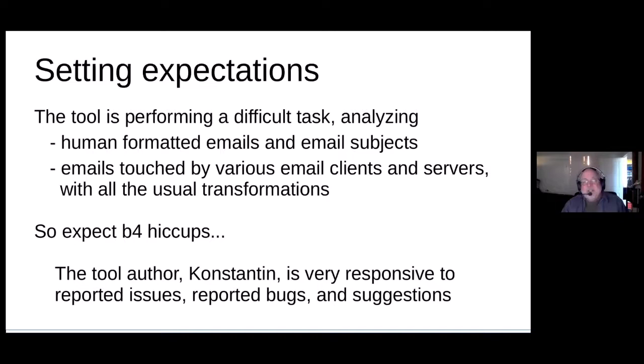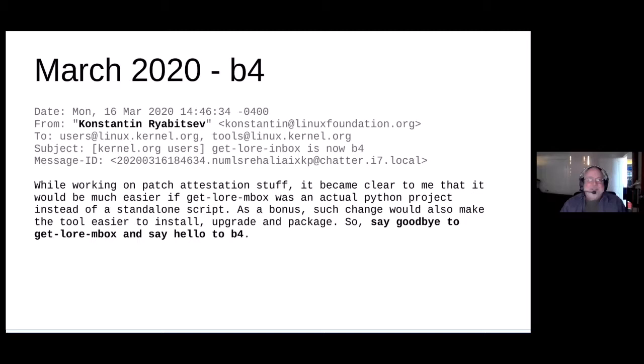In March 2020, a couple of months later, Konstantin sent another email deciding that this work is important enough to become an actual Python project. He packaged things up more formally and renamed the project from get-lore-mbox to b4. So in the future or in historical references you may see references to get-lore-mbox, but in the rest of this talk I'll be talking about b4, which is the new name for the same tool, and how it has evolved, grown, and expanded since then.